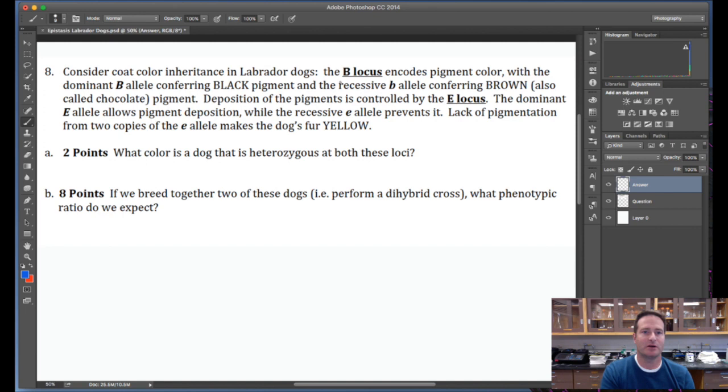Let's consider what we know. We've got two loci, the B locus here and the E locus here. B locus encodes pigment color, so there's either dominant black or recessive brown alleles. But the deposition of those pigments is controlled by the E locus. The dominant allele allows pigment deposition, while the recessive allele prevents it. And if pigment deposition is prevented, you end up with a yellow lab.